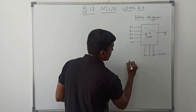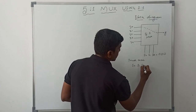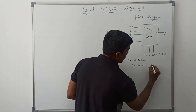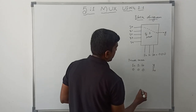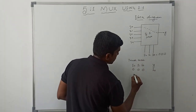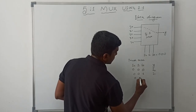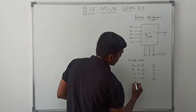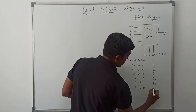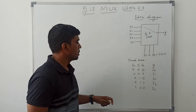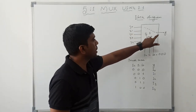Now I write the truth table. s2, s1, s0 are the 3 selection line signals, and Y is the output. When s2=0, s1=0, s0=0, i0 is connected to output. When s2=0, s1=0, s0=1, i1 is connected to output. When s2=0, s1=1, s0=0, i2 is the output. When s2=0, s1=1, s0=1, i3 is the output. When s2=1, s1=0, s0=0, i4 is the output. Based on the selection line, the input is propagated to output.